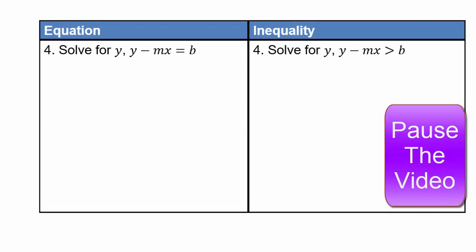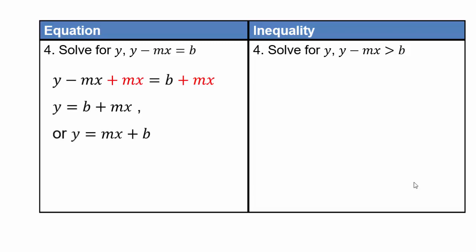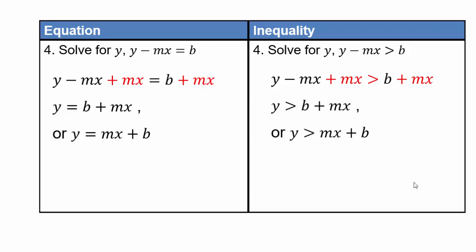Let's see what you can do on the next one — solve for y. When you have multiple variables and you're solving for one of them, they are called literal equations. So here you're solving for the variable y. Since we have negative mx, add mx to both sides, giving y equals b plus mx, which can also be written as y equals mx plus b — the equation of a line in slope-intercept form. For the inequality, it will be y greater than mx plus b.